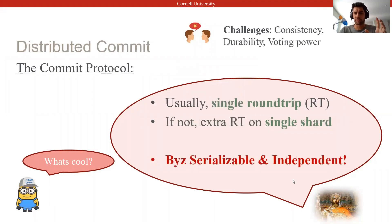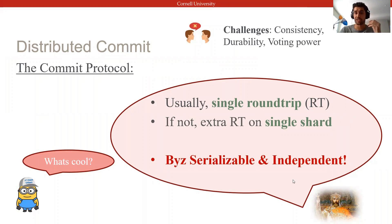This commit protocol follows a two-phase commit pattern in which all replicas vote and the client acts as coordinator. In most cases, when there are no failures or contention, it allows clients to commit and return to the application in just a single round-trip. If that is not the case, the decision is not yet durable and we need an extra round-trip to persist it.